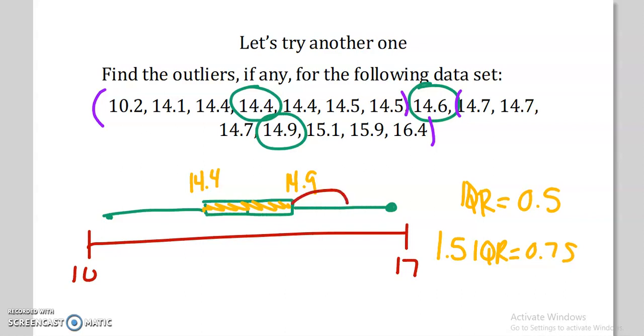So 14.9 plus 0.75 gives us 15.65. So if I go to here at 15.65, I've now, anything above that number is considered an outlier. And then if I go this way, 14.4 minus 0.75, so we're going down, this is going to be 13.65.